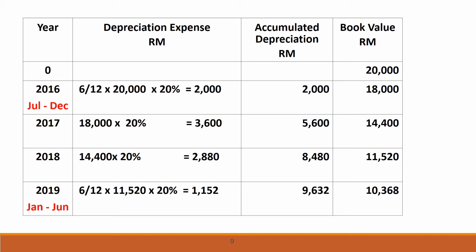We continue the same calculation through 2019. For 2019, we calculate depreciation from January to June — 6/12 months: 20% × RM11,520 × 6/12 = RM1,152. Therefore, accumulated depreciation of the old machine at the time of disposal is RM9,632, and the book value is RM10,368.